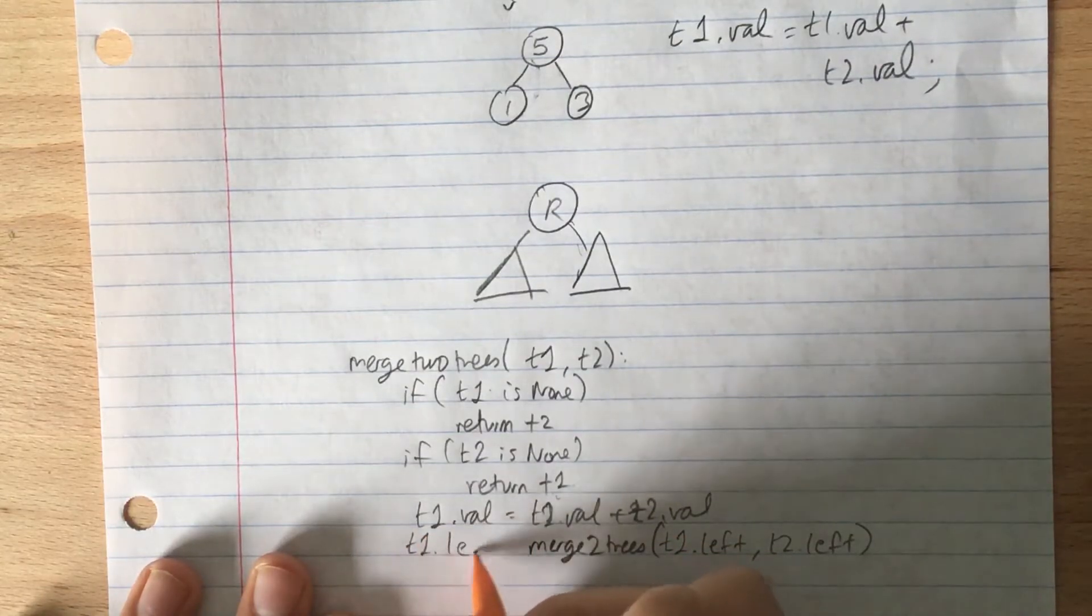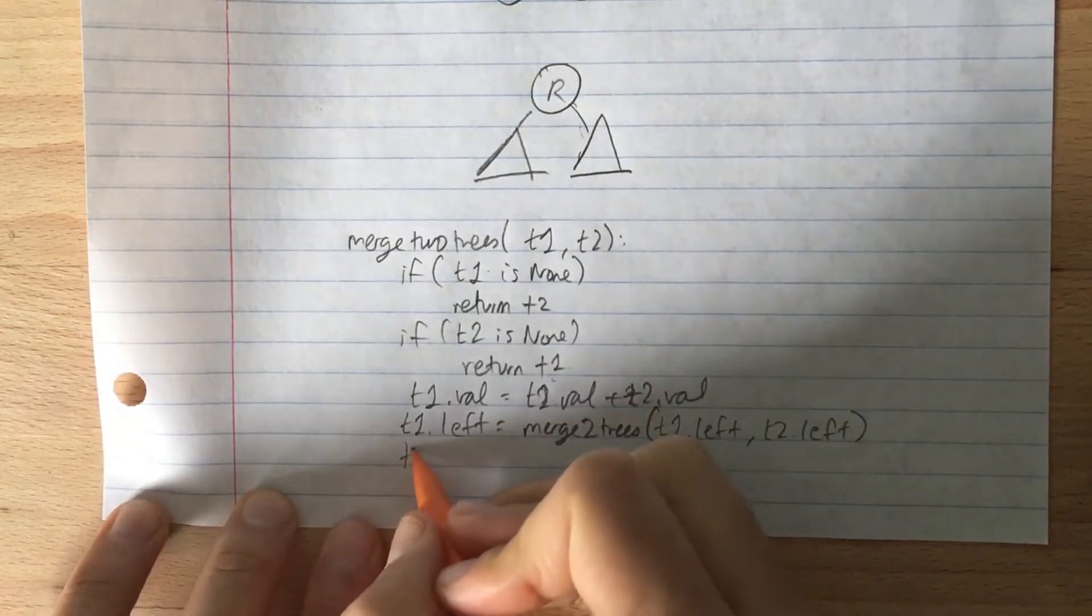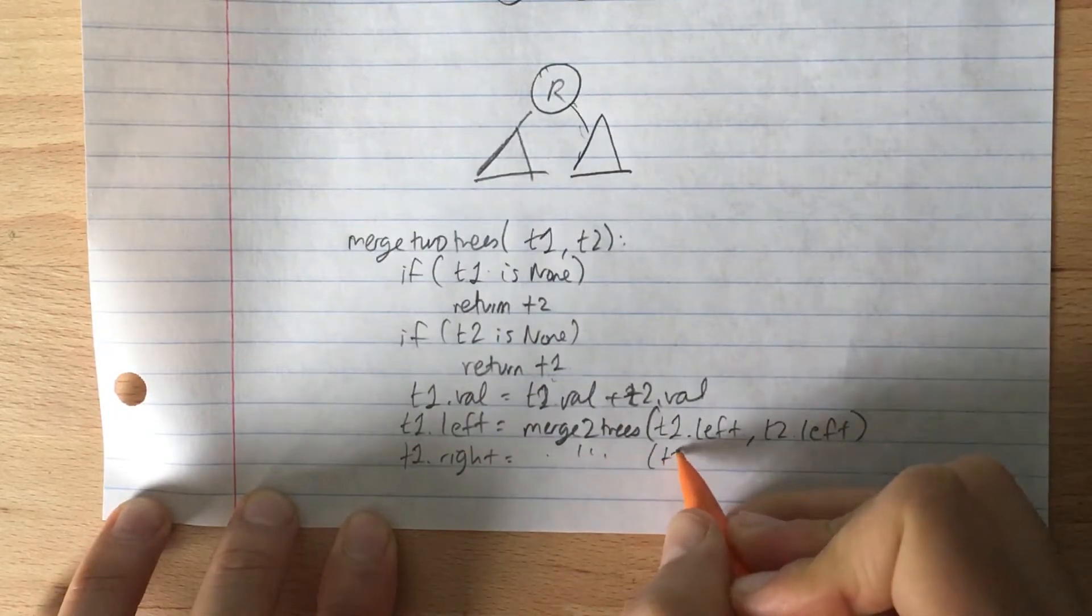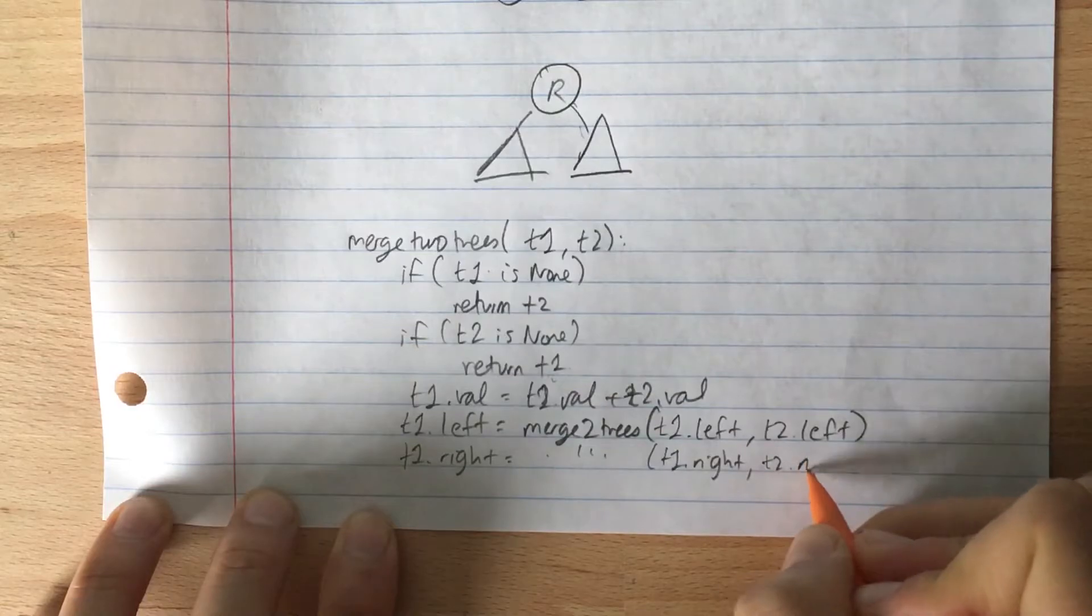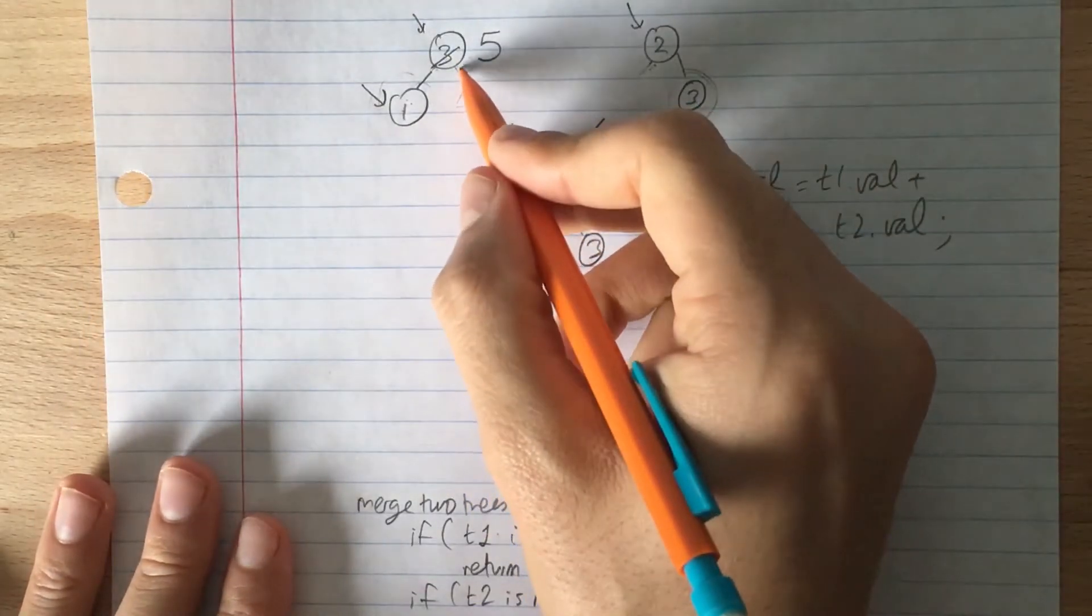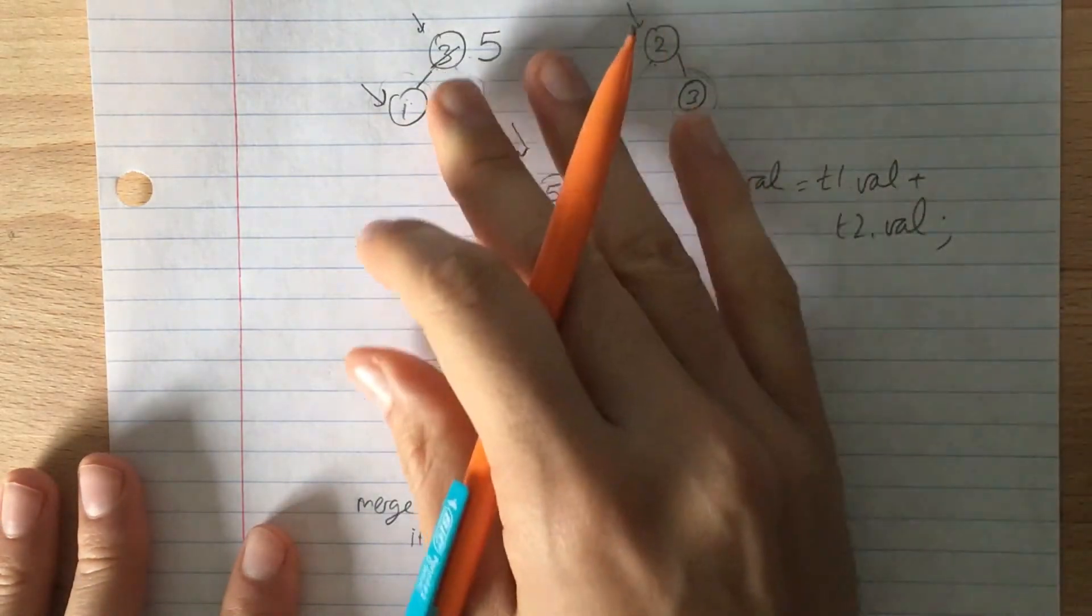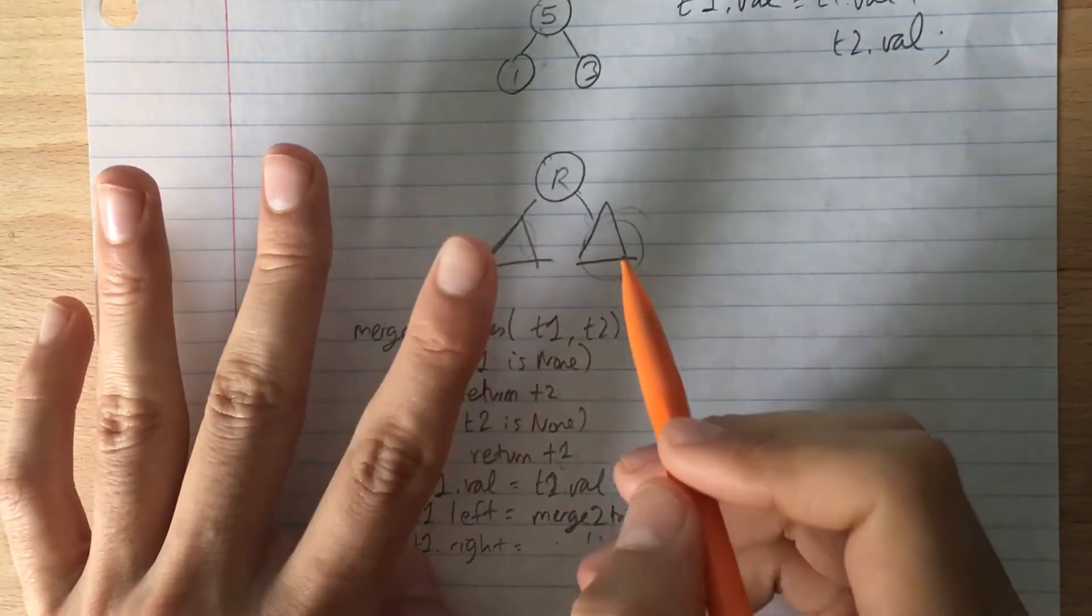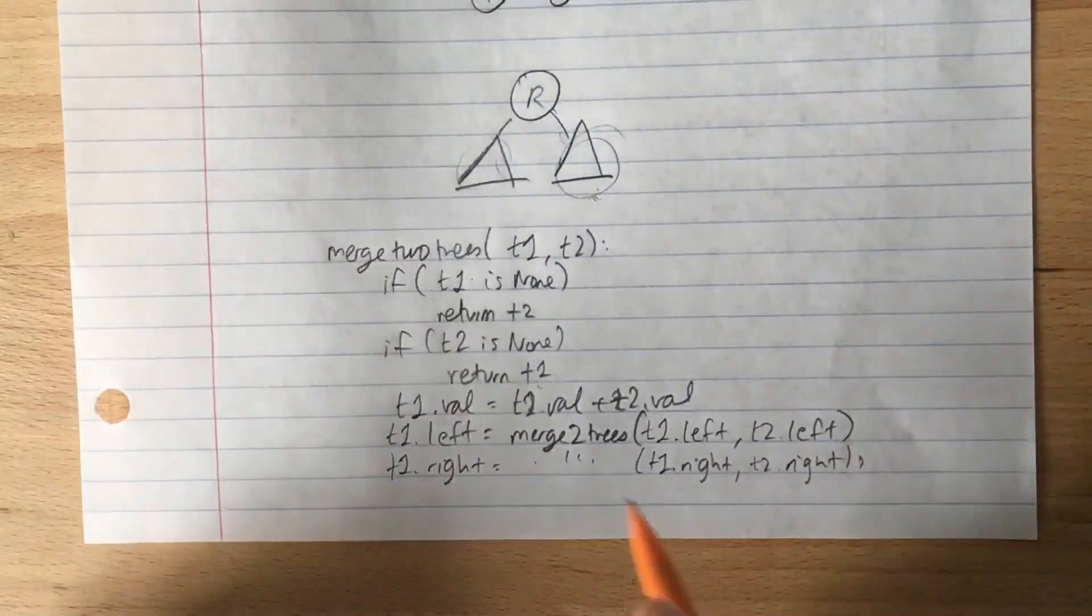So we say t1.left is equal to merge two trees. And similarly, we do the same thing with t1.right. t1.right is equal to merge two trees, t1.right and t2.right. Because we want to see in this case, if this is null, we want to return this one. So we recurse essentially on the left subtree and the right subtree, and if both of them are null, or either of them are null, or both of them are null, we handle those cases respectively.